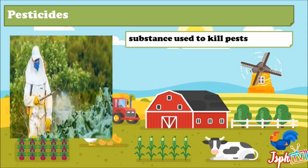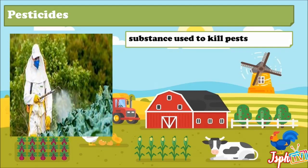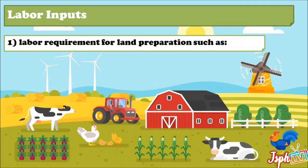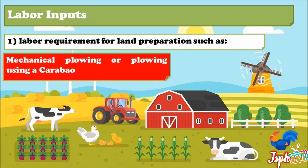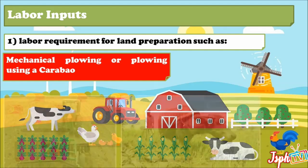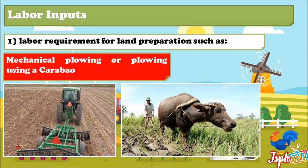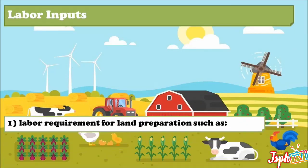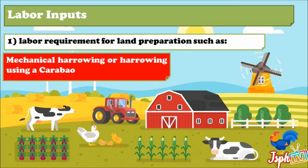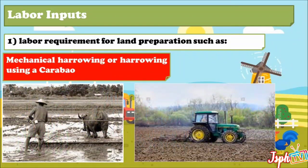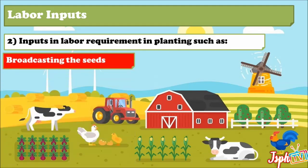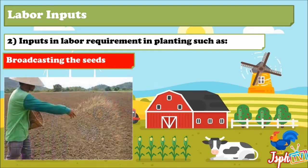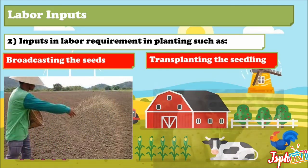Pesticides: a substance used to kill pests. For labor inputs, labor requirements for land preparation include plowing using a carabao, and mechanical harrowing or harrowing using a carabao. Inputs in labor requirements for planting include broadcasting the seeds and transplanting the seedlings.